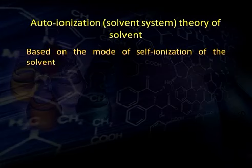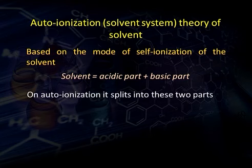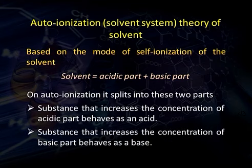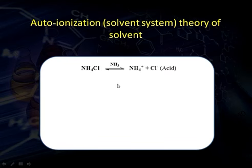The solvent system theory of auto-ionization is based on the mode of self-ionization of the solvent. Any solvent is made up of an acidic part and a basic part, and on auto-ionization it splits into these two parts. Recalling ammonia: two ammonia molecules form one ammonium ion (acidic part) and one amide ion (basic part).